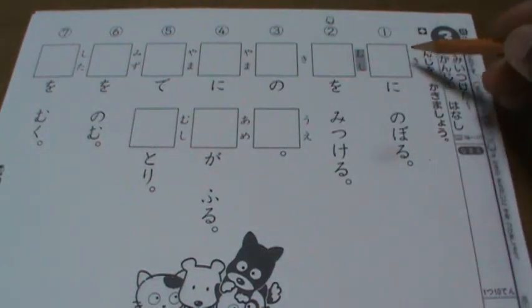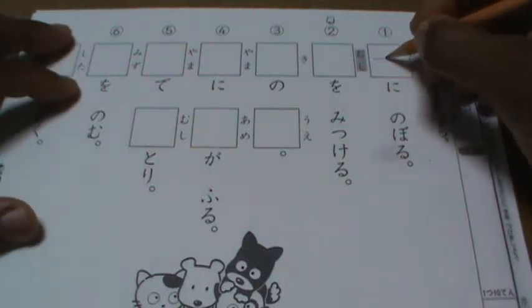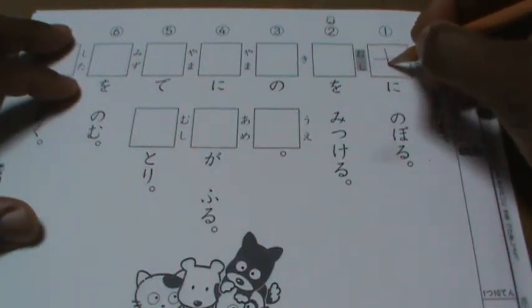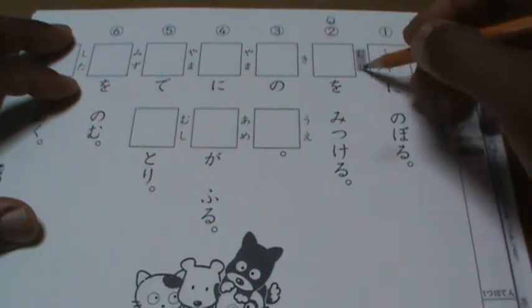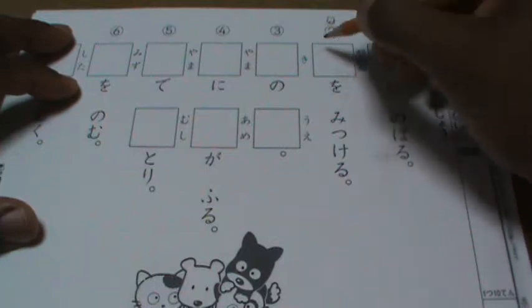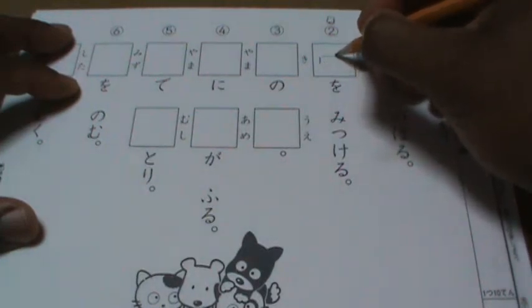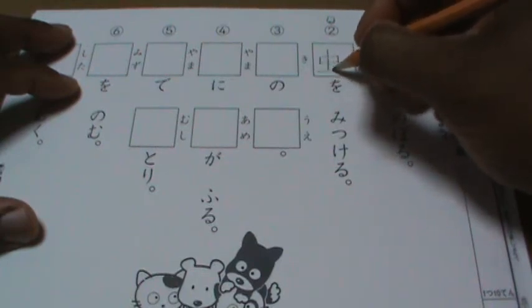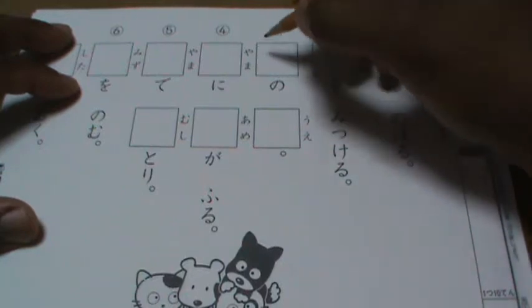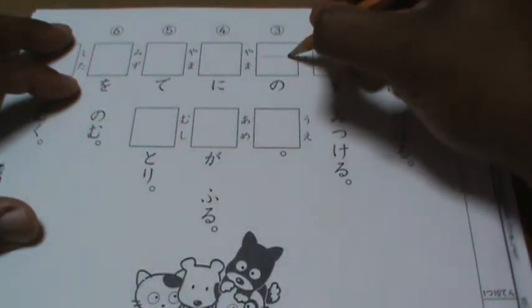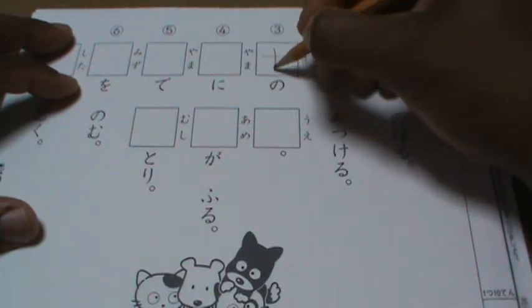Okay, so ki, which is tree, is one, two, three, four strokes. Mushi, which is bug, is one, two, three, four, five, six. Ki again, which is tree, so it's one, two, three, four.